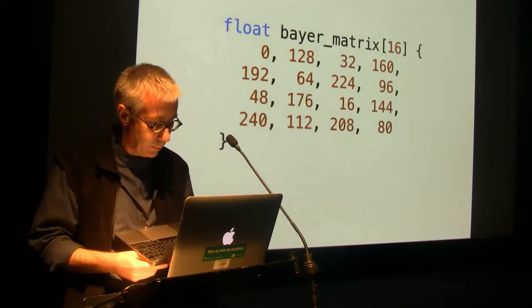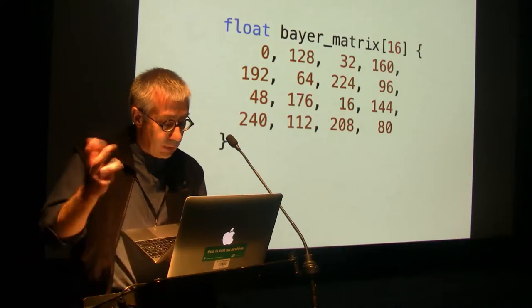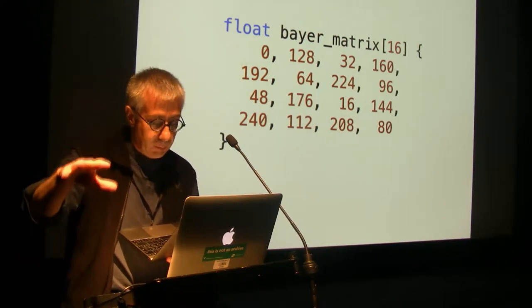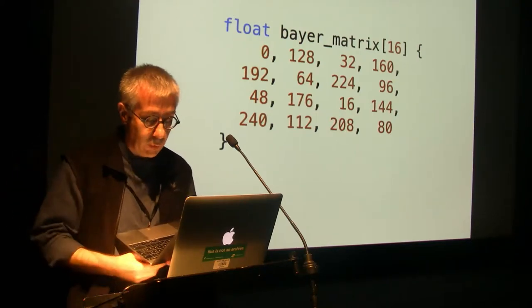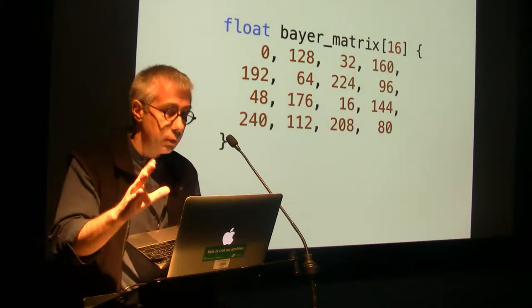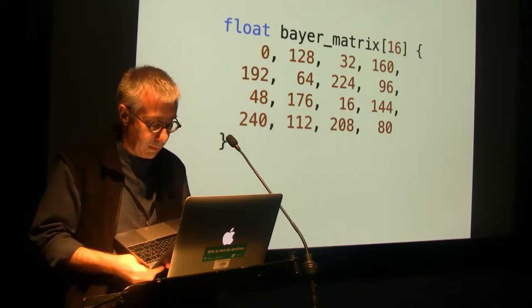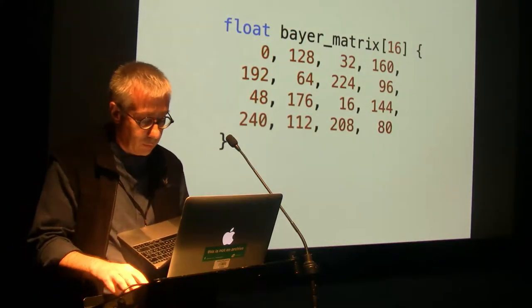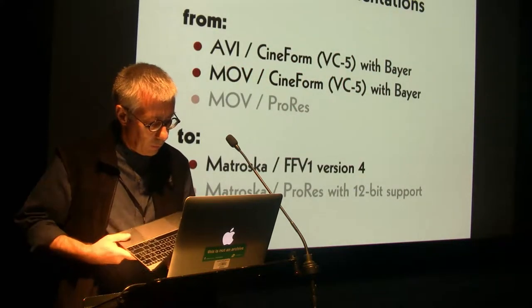These slides are from my last year's presentation. Today we have to de-Bayer the raw data in order to store the generated RGB or YCbCr data into FFV1. This means that we first have to blow up the data and then compress the data again. The goal would be to store the raw data directly without these two steps.